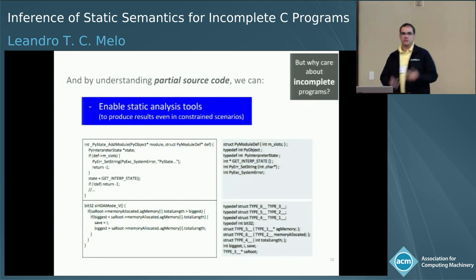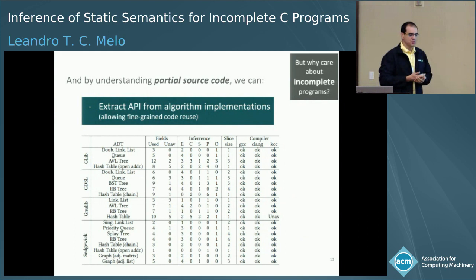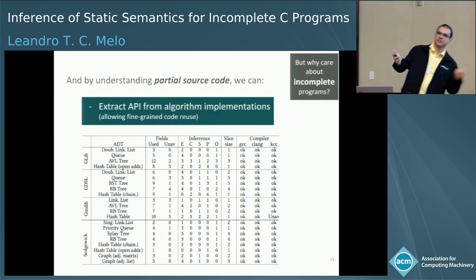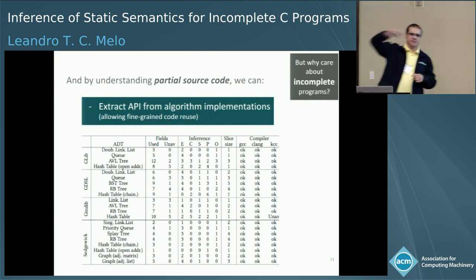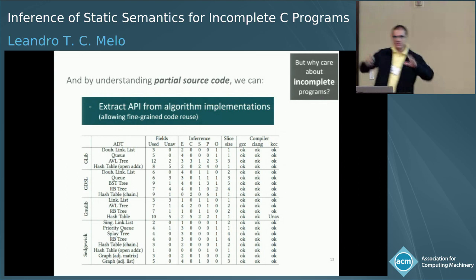Understanding partial source code is also interesting if we want to do fine-grained code reuse, because there are so many data structure implementations out there in cool projects. You want to reuse part of that thing, but then there is one type and another type at the very top of the header hierarchy, and it goes crazy — because it's a textual inclusion mechanism and there's just no way out. But what if we simply infer the missing parts from that algorithm, and you can copy and paste it into your project and it just works? Of course, you might need to do some fine-tuning.